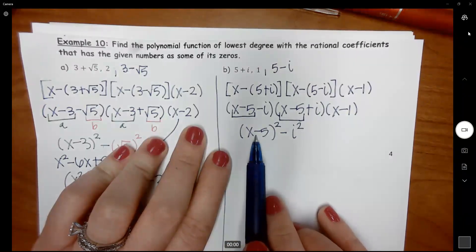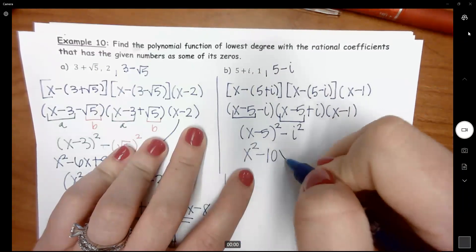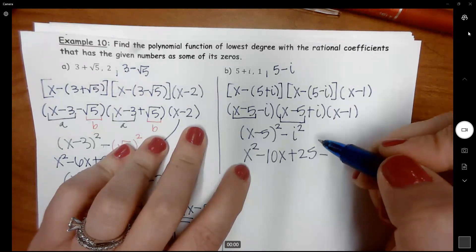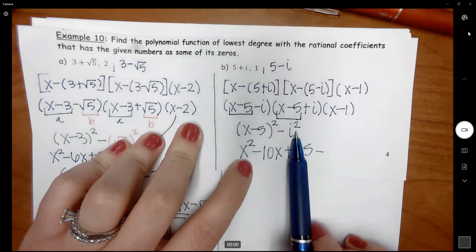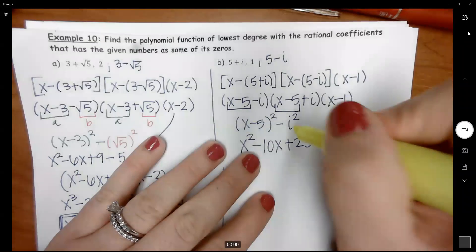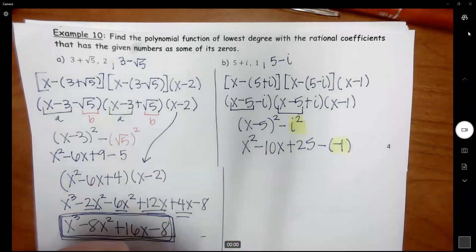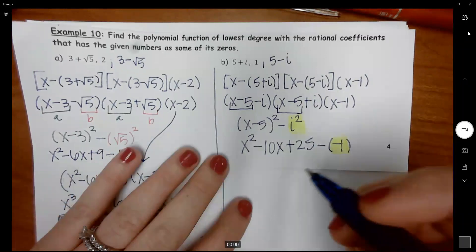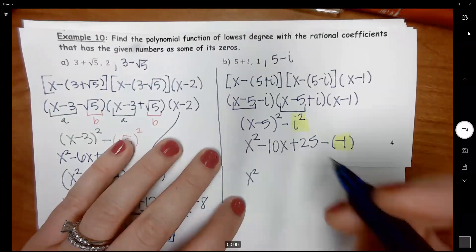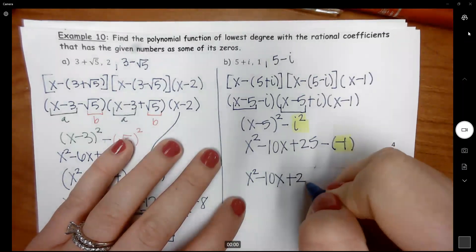Expand this out and FOIL. This is X minus 5 times X minus 5. When you multiply that out, you get X squared minus 10X plus 25 minus i squared. i squared equals negative 1. So we got X squared minus 10X, that's 25 plus 1, plus 26.